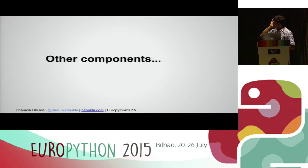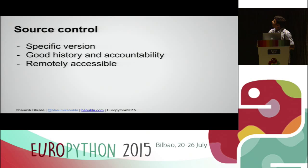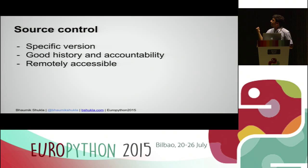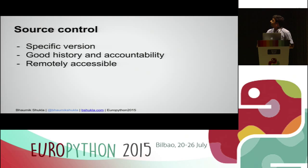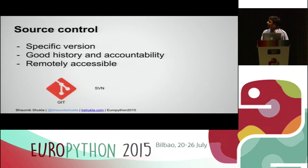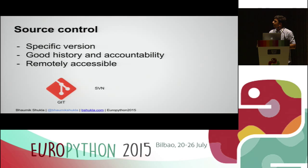You also need to take care of other components, like source control — it's a must. If I want to check out a specific version, source control will handle all that. It also provides good history, accountability, and remote accessibility. Git and SVN are the two most famous source control systems; we use Git.